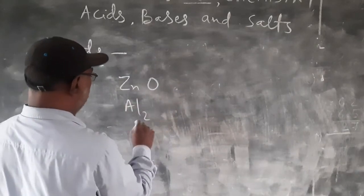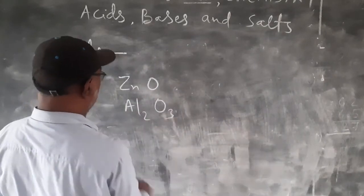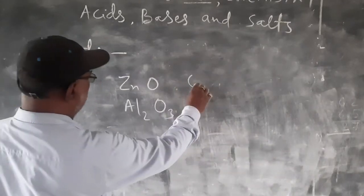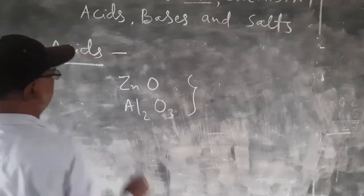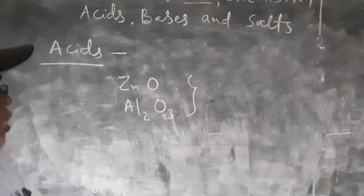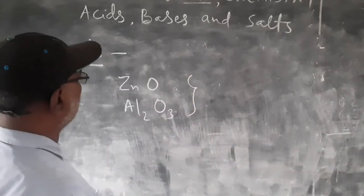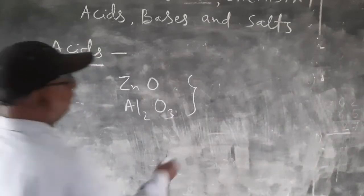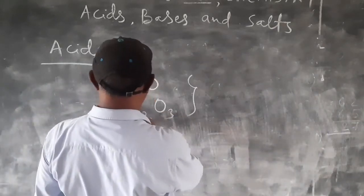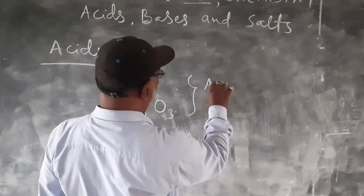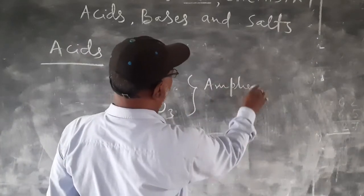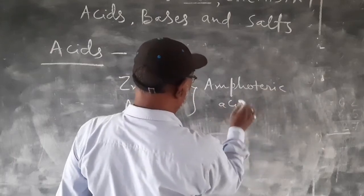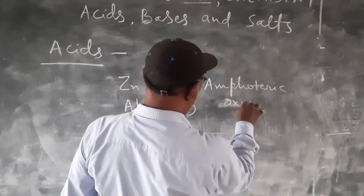ZnO and aluminum oxide Al2O3 are amphoteric oxides. That is, the oxide of a metal which shows both types of characteristics - both acidic as well as basic. Zinc oxide and aluminum oxide are amphoteric oxides.